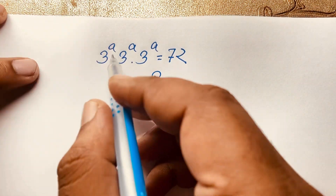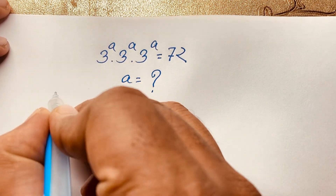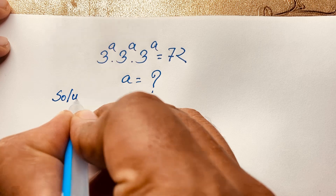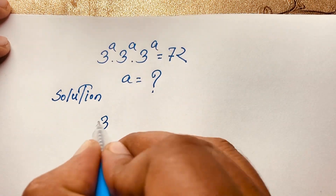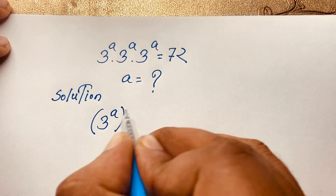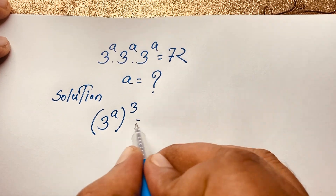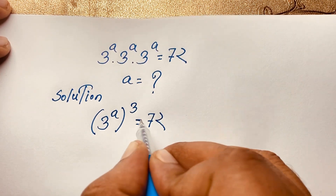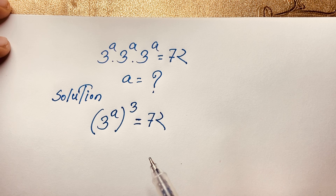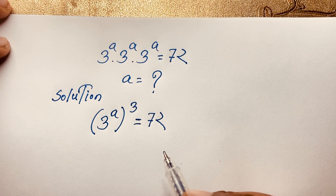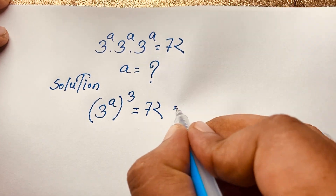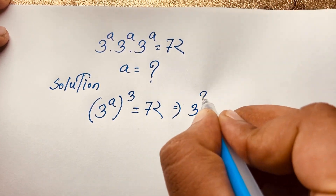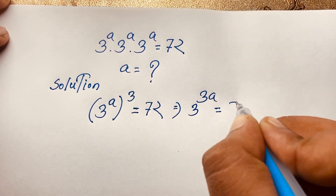So let's start. We can write this as 3 to the power of a, bracket, to the power of 3, equals 72. Using the law that a to the power n, whole to the power m, equals a to the power nm, this expression becomes 3 to the power 3a is equal to 72.